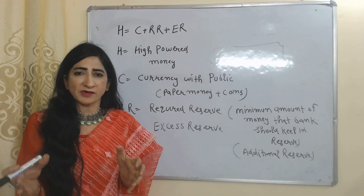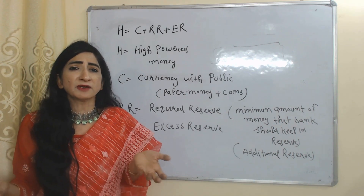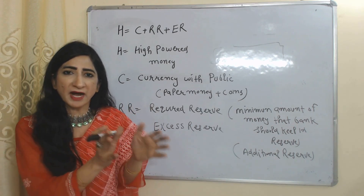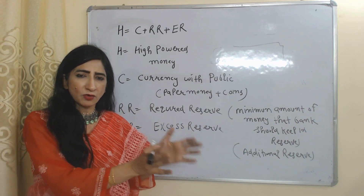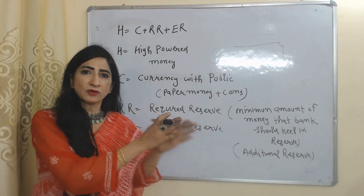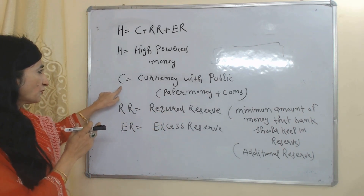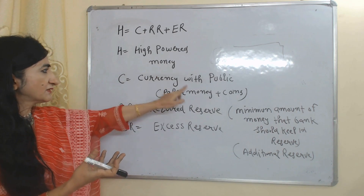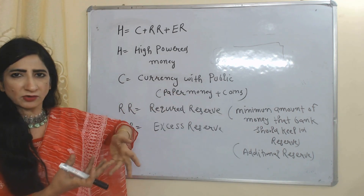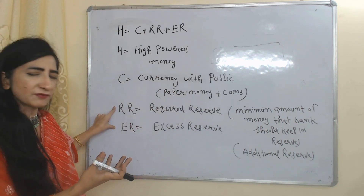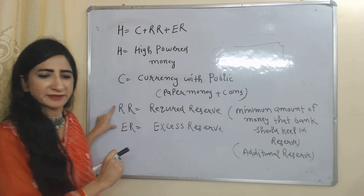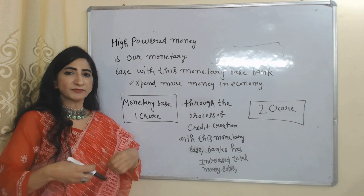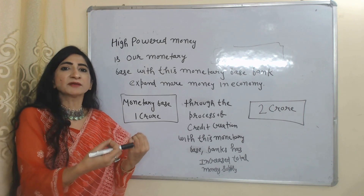Whatever money is issued by the central bank or government is called high powered money, or our money base. This money is divided into two parts: some part goes to the bank and some part goes to the public. C is the part of high powered money that goes to the public as currency, while the two reserves — RR and ER — are the part of high powered money that goes to the bank.